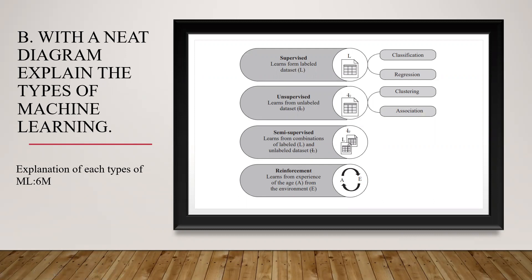For the or-choice second question — with a neat diagram, explain the types of machine learning (6 marks) — you can write the definition of machine learning as seen in the other question. Then draw a diagram or list the types: supervised learning, unsupervised learning, semi-supervised learning, and reinforcement learning, explaining each in detail. Classification, regression, clustering, and association can just be listed down. Explaining all types of machine learning covers six marks.